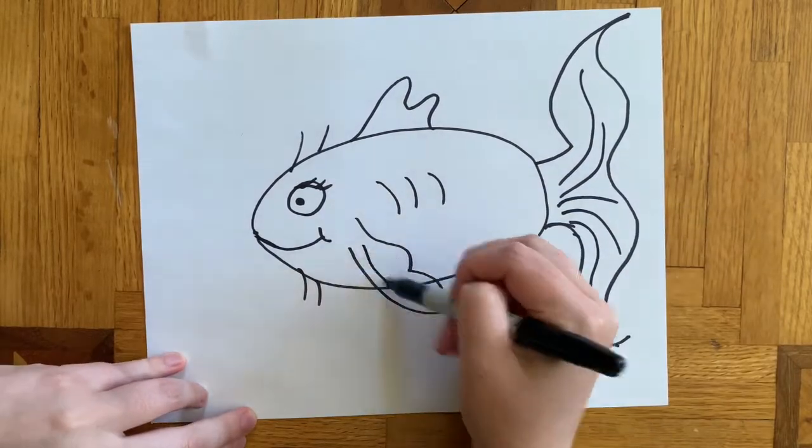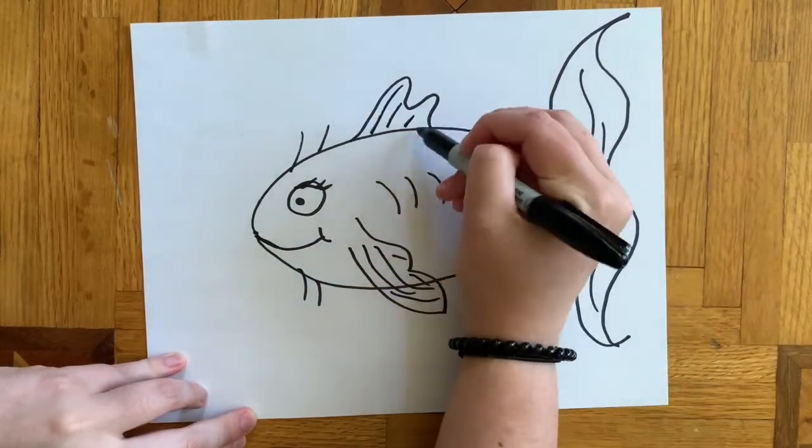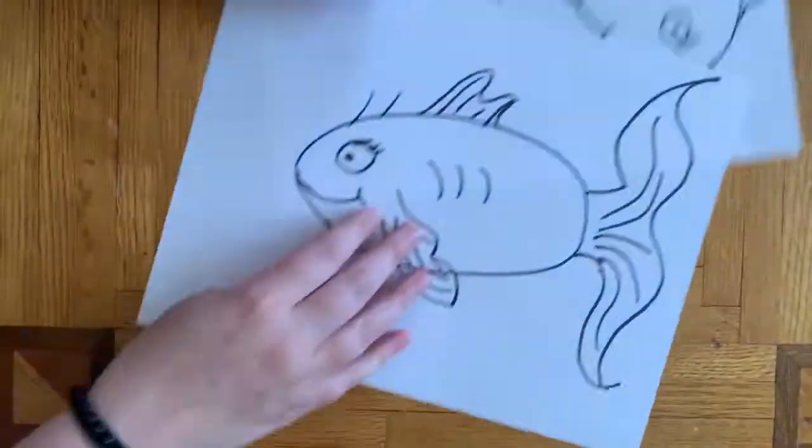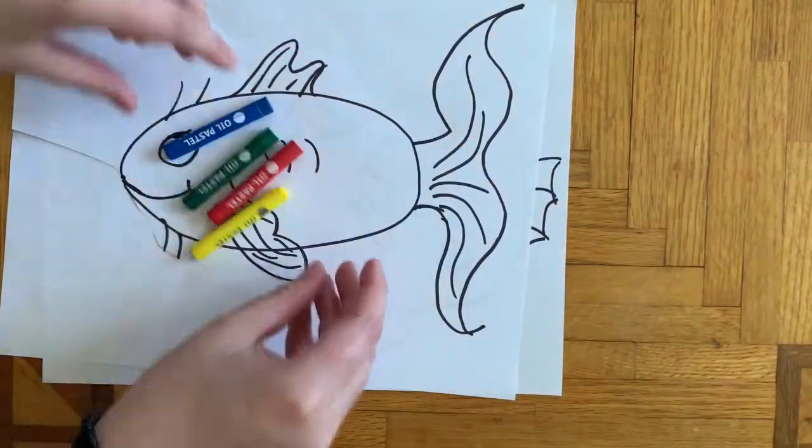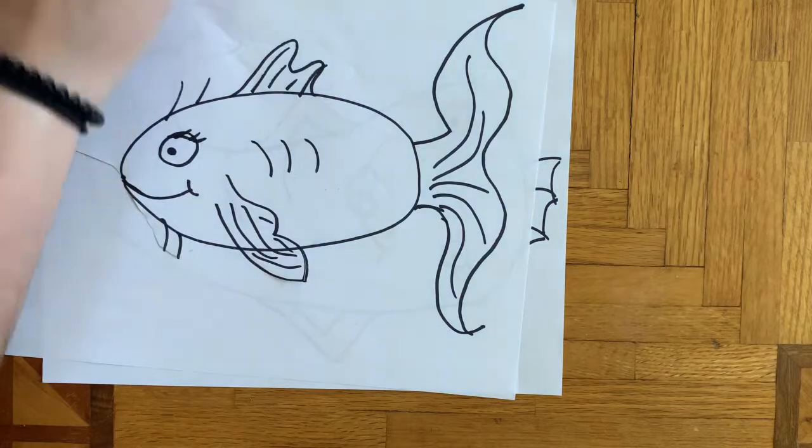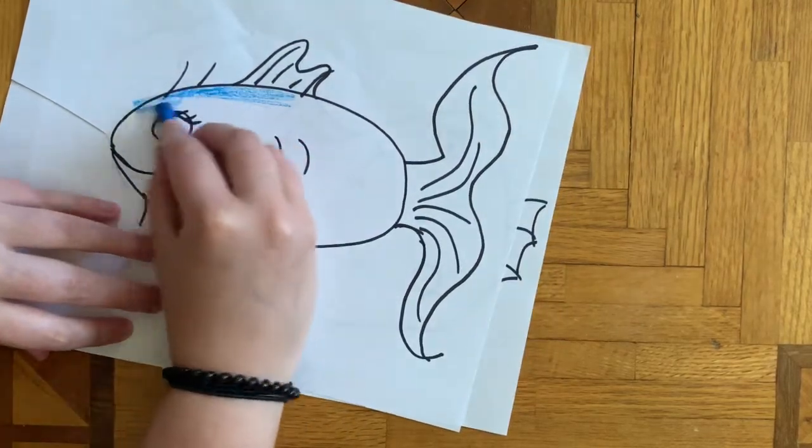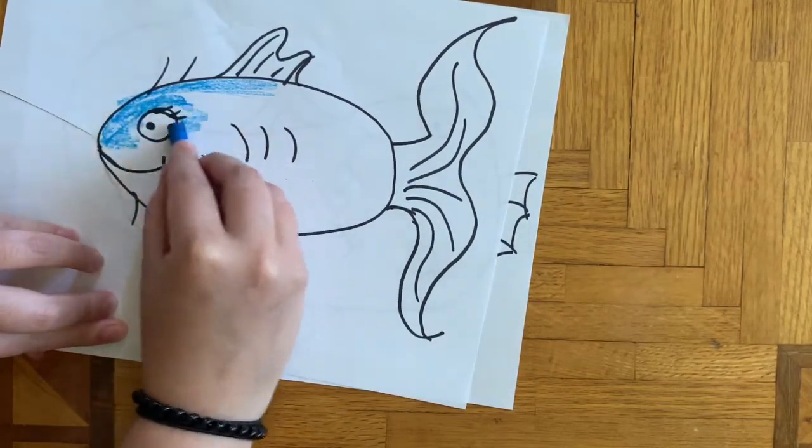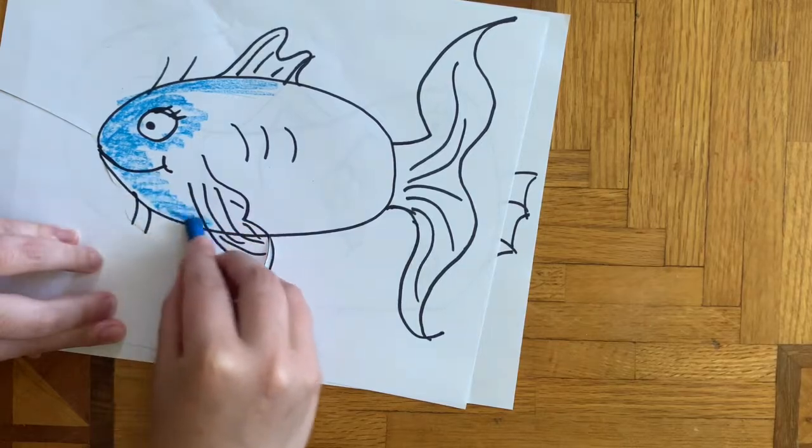Add some lines to your fins to make them look like they move and just give them a little bit more detail. You could have one of these two fish but choose one and use the colors red, blue, yellow, and green to color in your fish because these are the colors that are in the book.